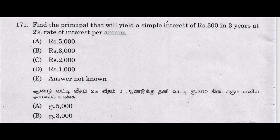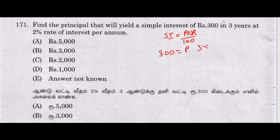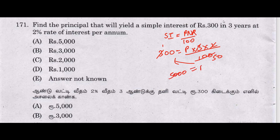Next problem: Find the principal that will yield a simple interest of 300 in 3 years at 2% interest rate. Using the simple interest formula SI equals PNR divided by 100: SI is 300, N is 3, R is 2. Solving gives the principal amount as 5,000 rupees.